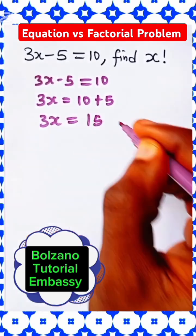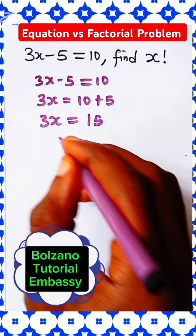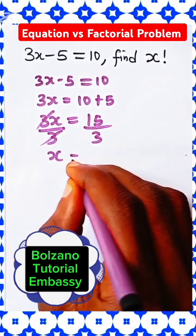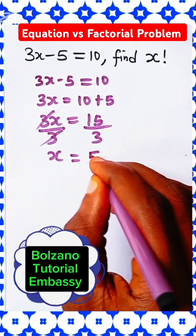3x is equal to 15. Now, to make x stand alone, divide both sides by 3. 3x is equal to 15 divided by 3, which is 5.